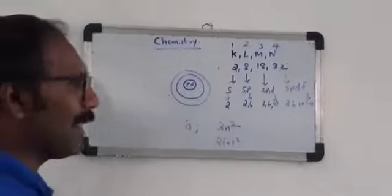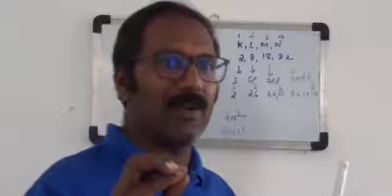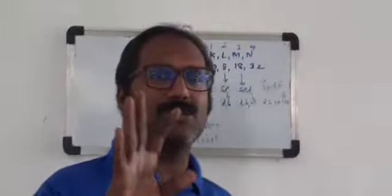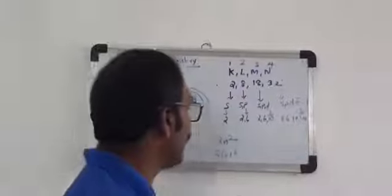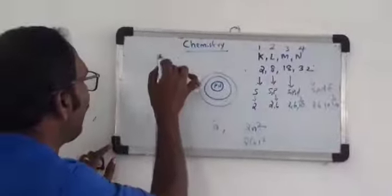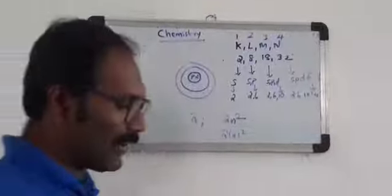In this periodic table, we will talk about the important elements. The most electron negative element is fluorine. Fluorine is the most important element.